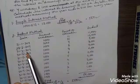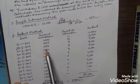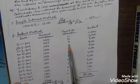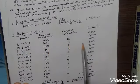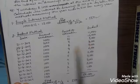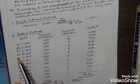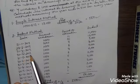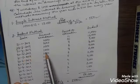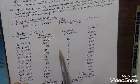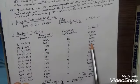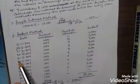On 31st March 2019, rupees 1000 has been withdrawn; 9 months is the utilization period, product is 9,000. On 30th April 2019, rupees 1000 has been withdrawn; 8 months is the utilization period, product is 8,000.